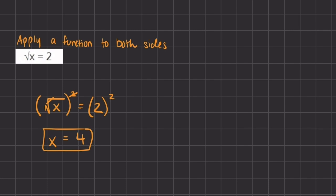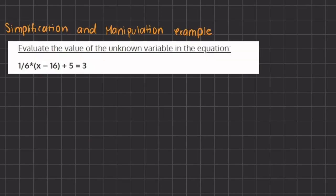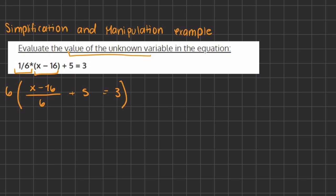That was the final manipulation method. Now we are going to solve a problem using both manipulation and simplification methods. We have the expression x minus 16 divided by 6, which is the same as one-sixth times the expression, plus 5 equals 3. The first thing we do is manipulate the expression by getting rid of the fraction — we multiply every term by the denominator 6. The 6s cancel in the first term, leaving x minus 16. Multiplying the second term, 5, by 6 gives 30, and multiplying 3 by 6 gives 18.